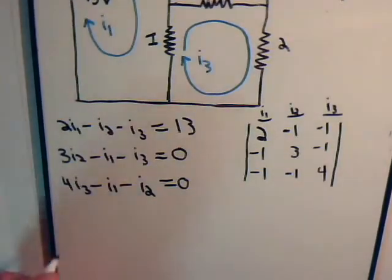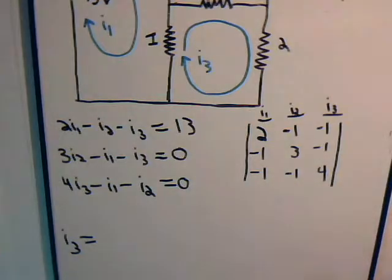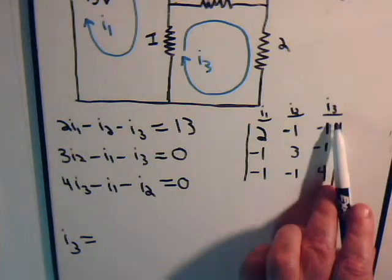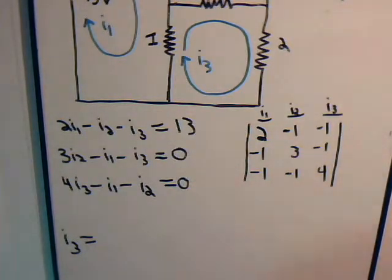I3 is equal to - we go back to the original determinant that we set up, and this column of numbers which are coefficients of I3 is replaced with that column of numbers. Everything else stays the same, so let's make some more room.